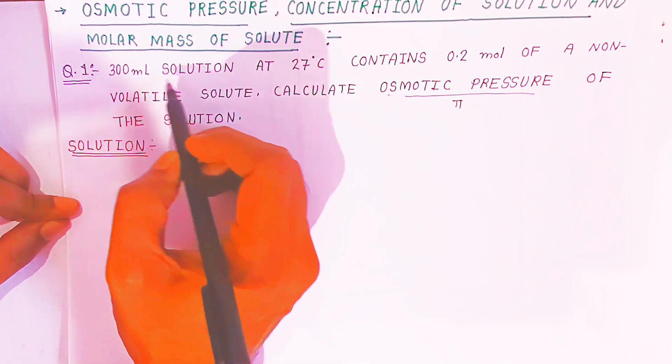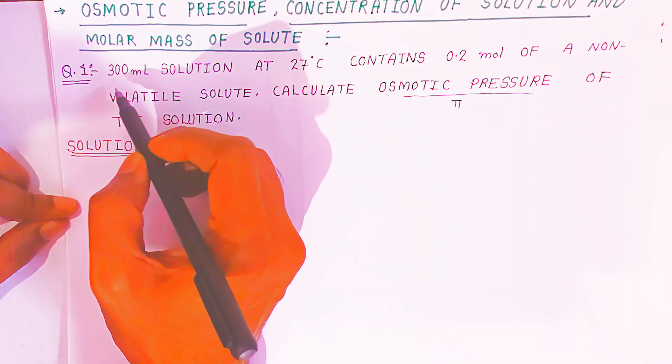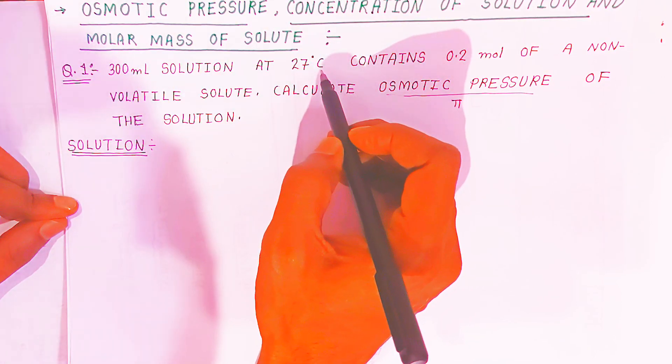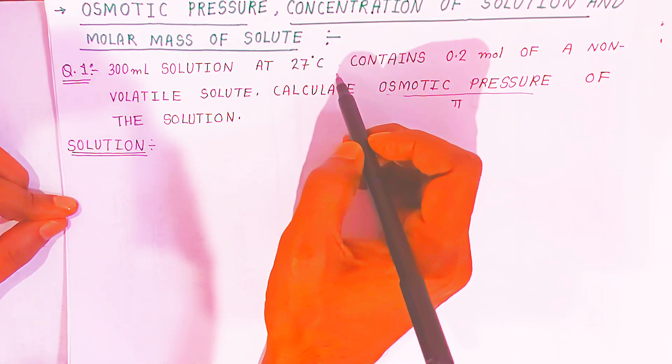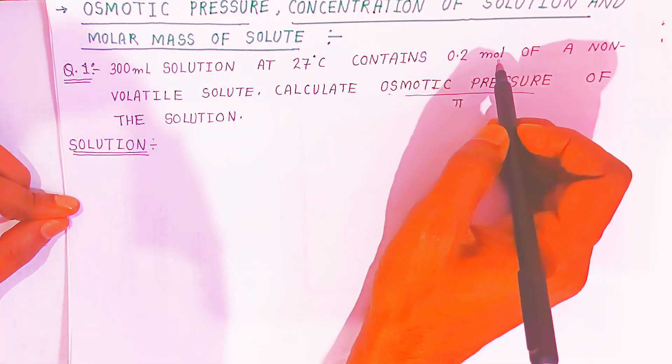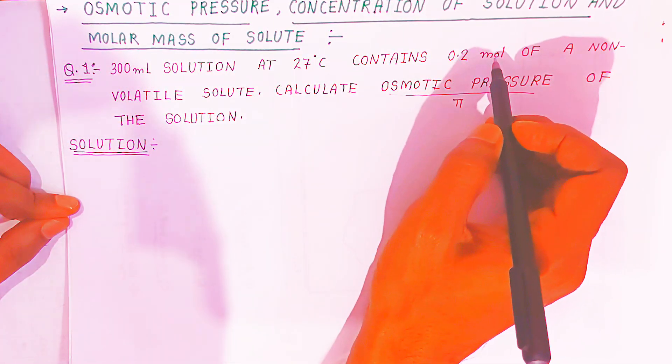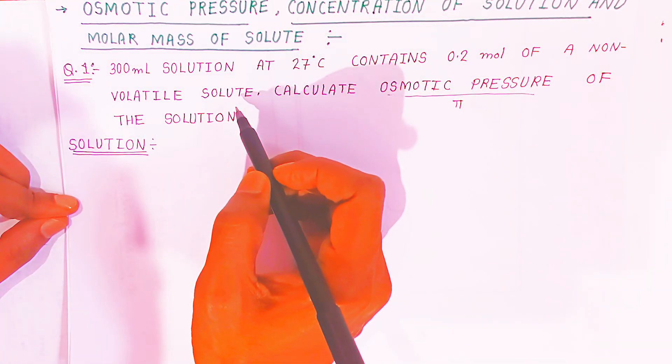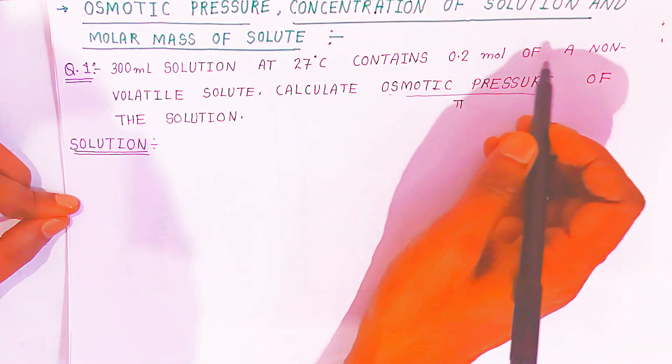Here 300 ml solution—it is given in milliliters, you have to convert into liters. And here it is given as 27°C, you have to convert into Kelvin. Now the concentration of the solution is given 0.2 mol of a non-volatile solute. The number of moles of non-volatile solute is given.